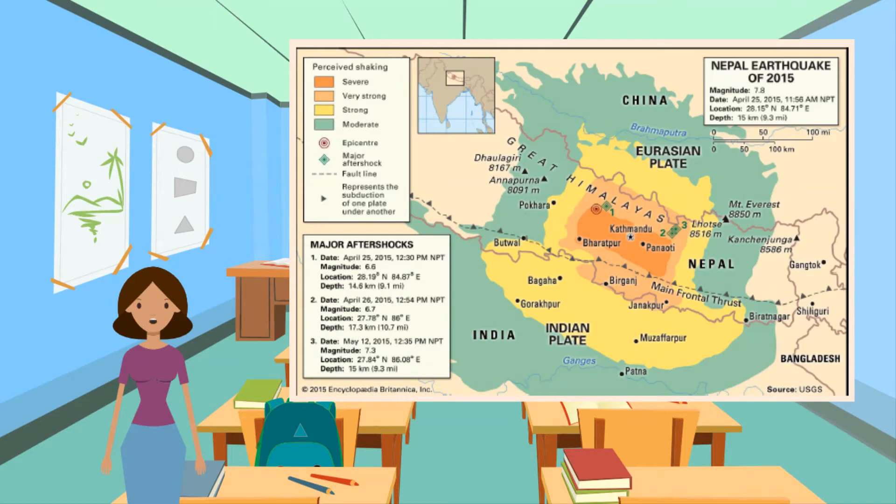Nepal is a developing country with a GDP of 29.04 billion US dollars in 2018.